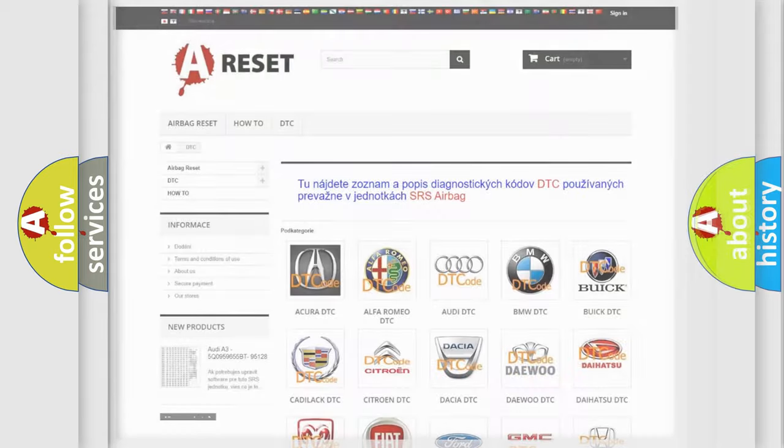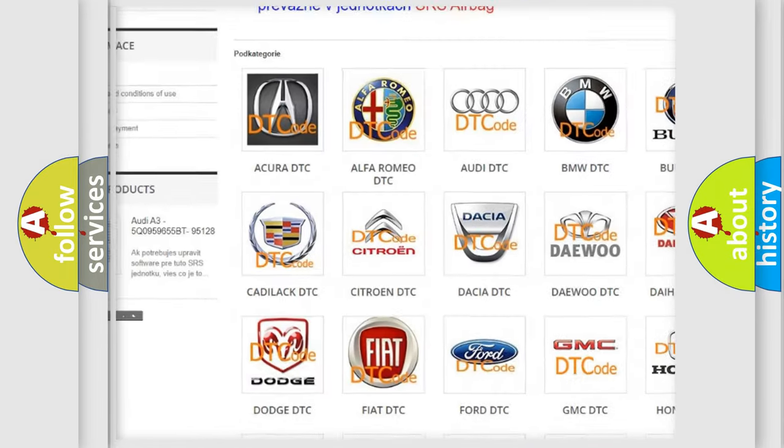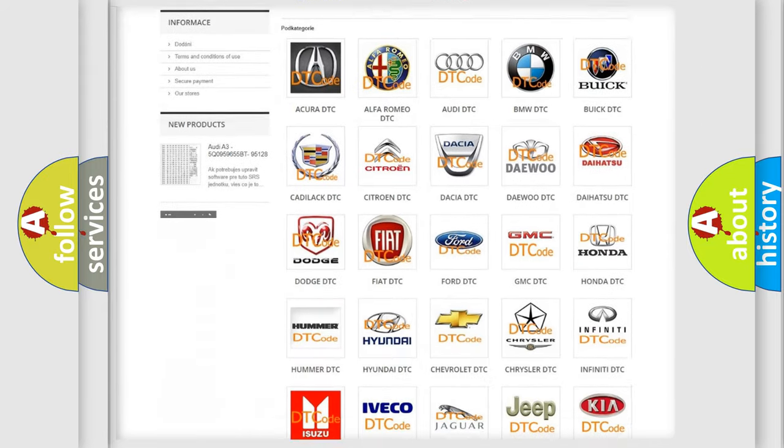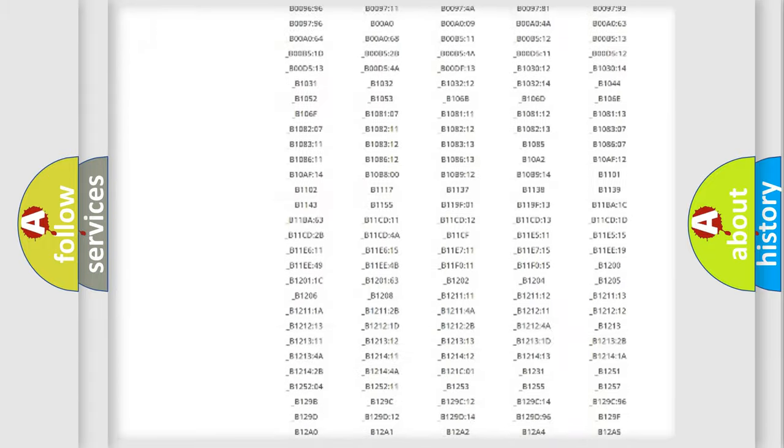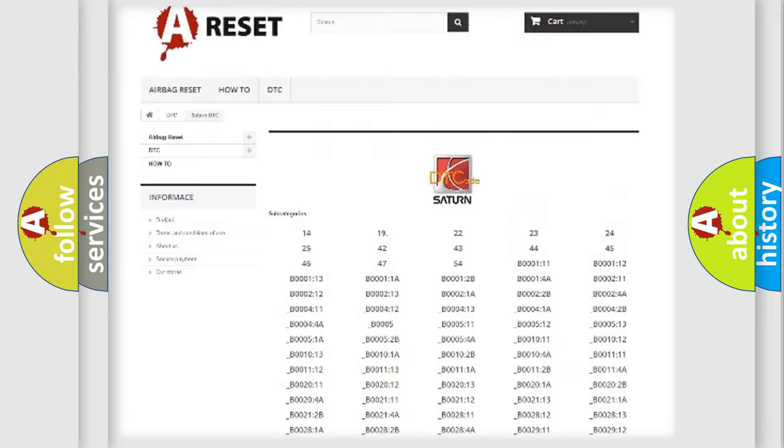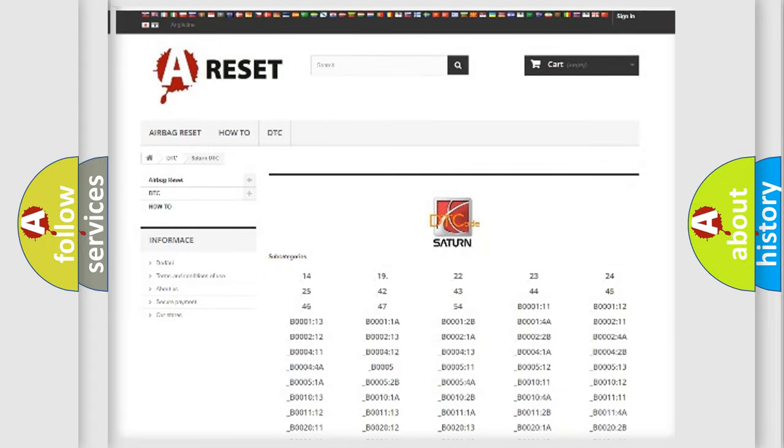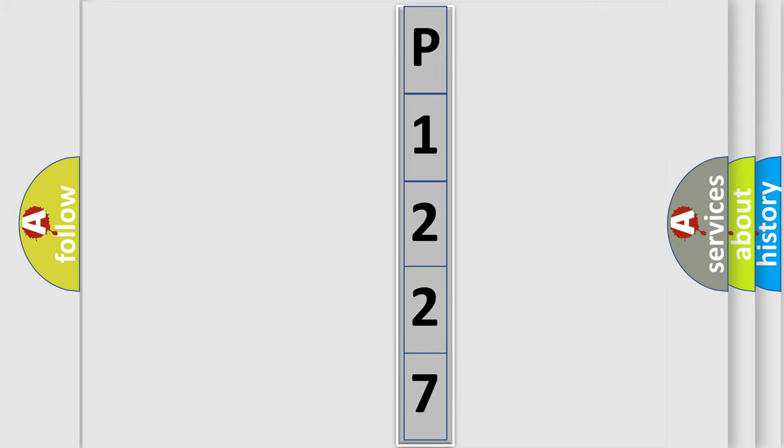Our website airbagreset.sk produces useful videos for you. You do not have to go through the OBD2 protocol anymore to know how to troubleshoot any car breakdown. You will find all the diagnostic codes that can be diagnosed in Saturn vehicles, and many other useful things. The following demonstration will help you look into the world of software for car control units. You can move the video a bit further.